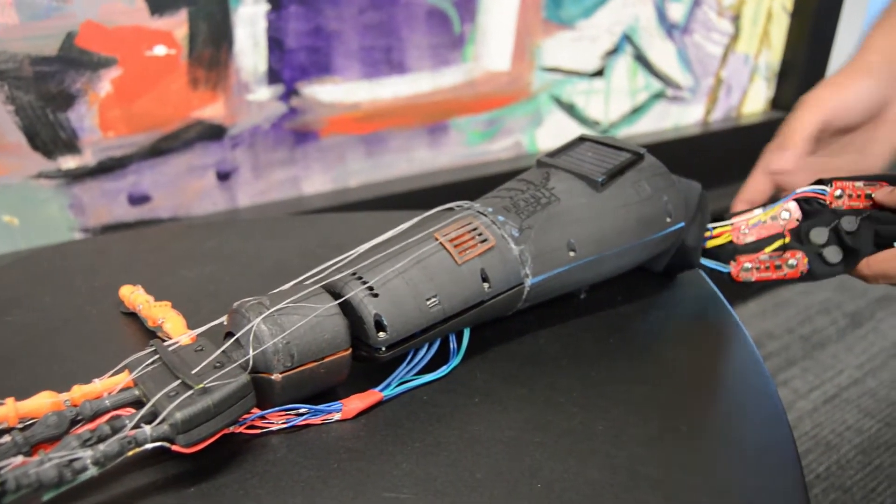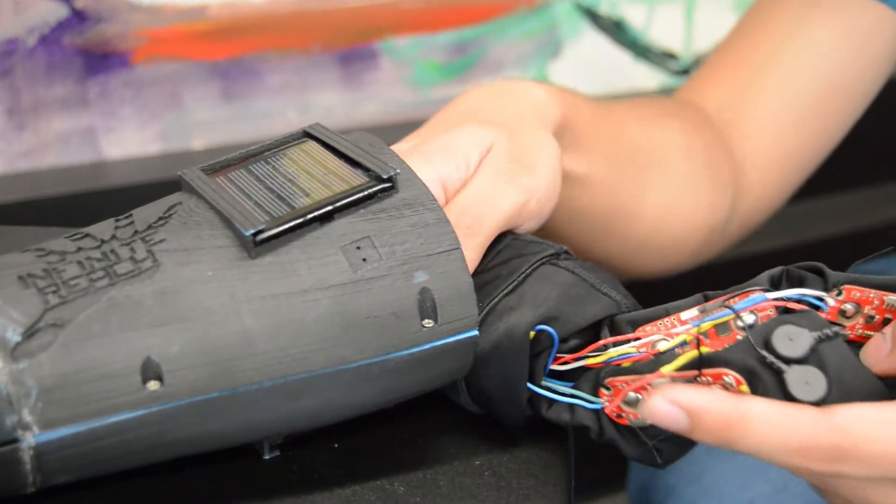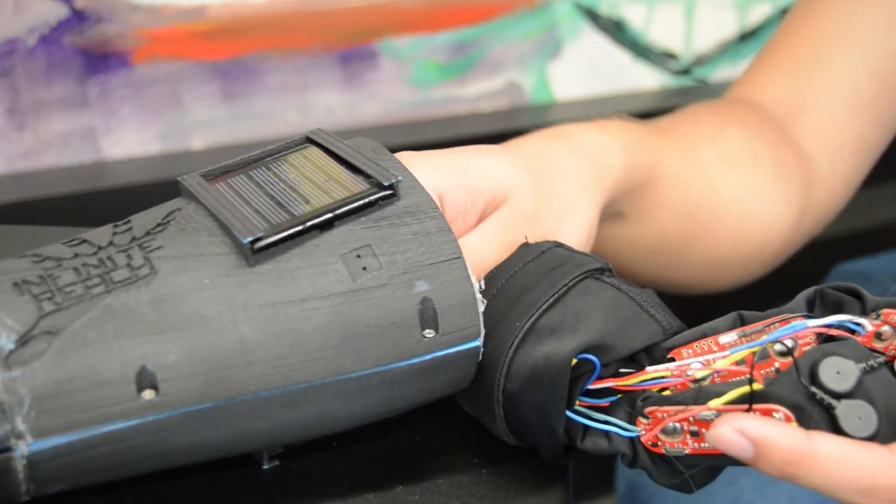We use solar panels embedded in the upper forearm for charging. We also have a USB charger.